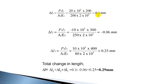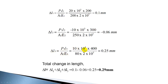Plus sign means there is elongation in the first section — the length increases by 0.1 mm. For the second section, delta L2 = P2·L2 / (A2·E2) = −10 × 10³ × 300 / (250 × 2 × 10⁵) = −0.06 mm, so the length reduces. For the last section, delta L3 = 10 × 10³ × 400 / (80 × 2 × 10⁵), with length 0.4 m converted to 400 mm.